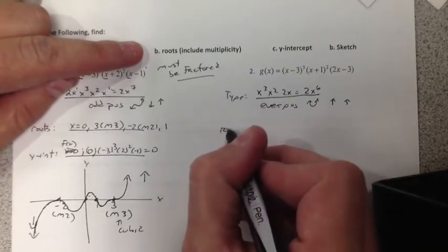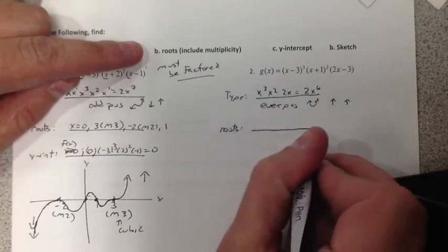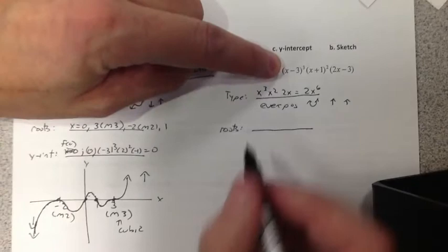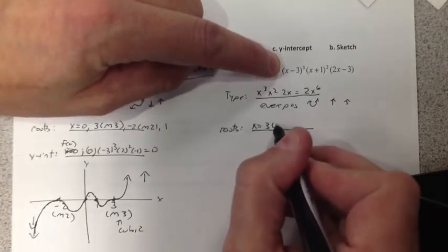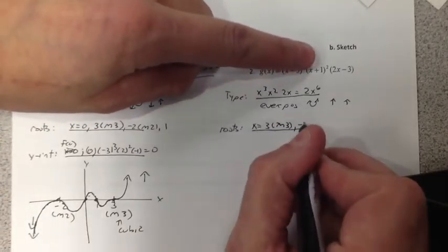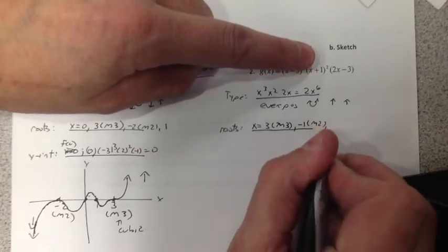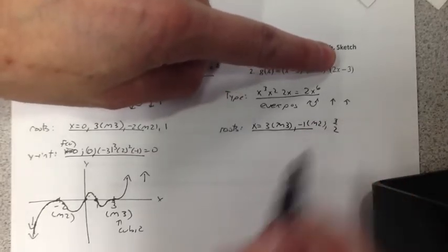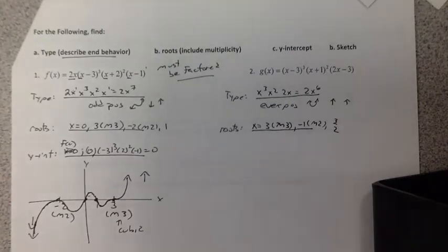Getting the roots, very simple to do. Let each factor equal to 0. We get 3, it says m3, negative 1, m2. And this gives us 3 halves. So there's our roots.